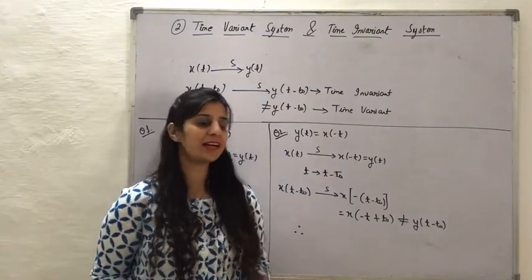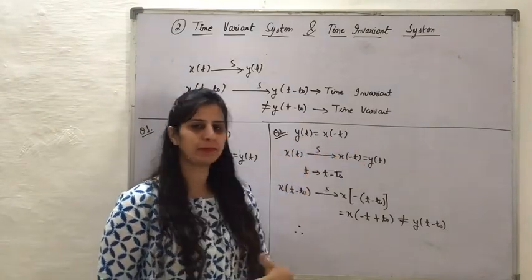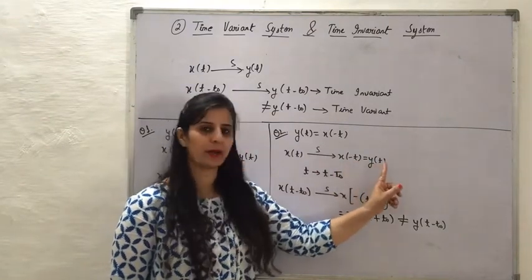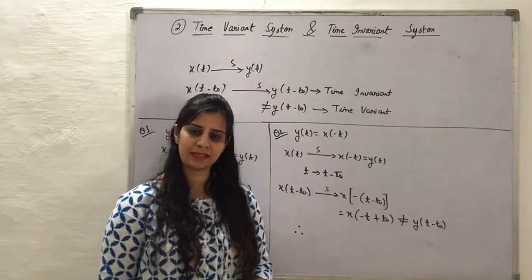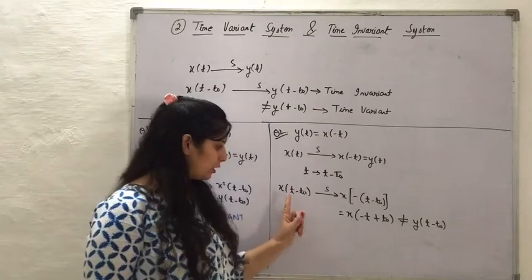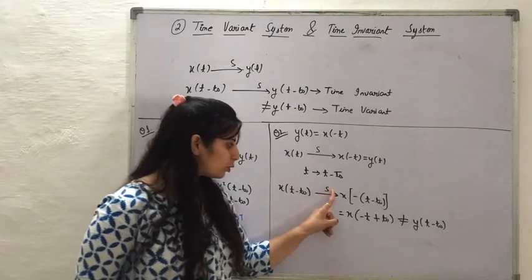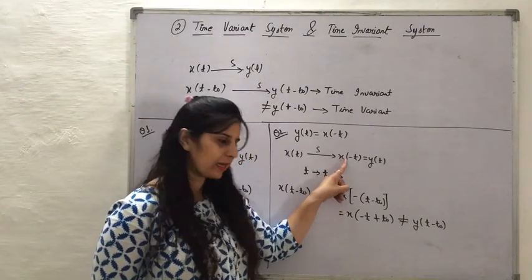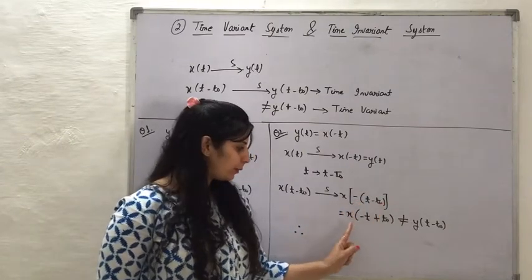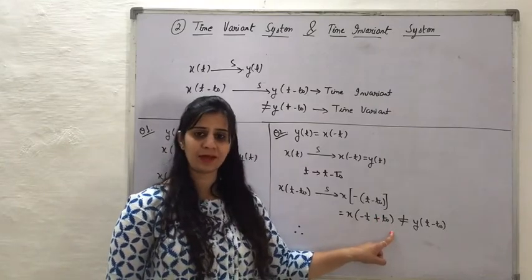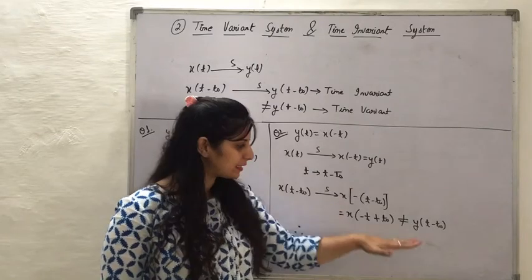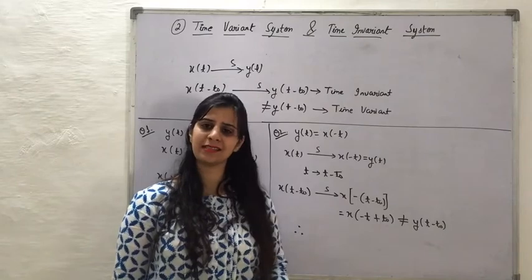The second example is a system with response y(t) = x(-t), meaning it produces time reversal. When x(t) passes through the system, it becomes x(-t) = y(t). Now introducing a delay at the input, transforming t to t minus t0, the input becomes x(t - t0). When this passes through the system, substituting t minus t0 and expanding the bracket gives x(-(t - t0)) = x(-t + t0). This is not equal to y(t - t0). Since the time delay introduced at the input is not reflected as-is at the output, this system is a time variant system.